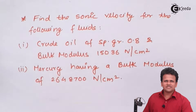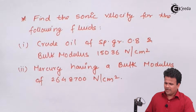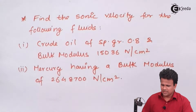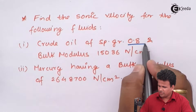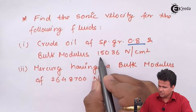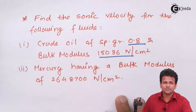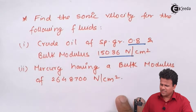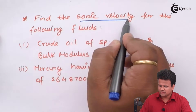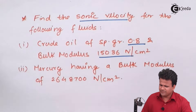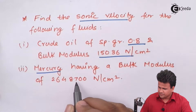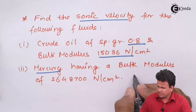We have a question which states: find the value of sonic velocity for the following fluids. First, crude oil having a specific gravity of 0.8 and a bulk modulus of 15036 N/cm². We have to calculate the sonic velocity for two fluids — first is crude oil, and next is mercury, whose density we already know.